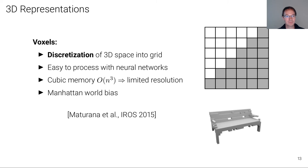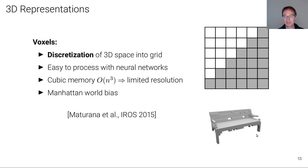One of the natural choices for output representations are voxel representations. Voxel representations discretize the 3D space into regular grid cells, as illustrated in the 2D and 3D examples. They were one of the first representations proposed for the reconstruction task, as they are easy to process with neural networks, basically just requiring generalizing 2D convolutions to 3D convolutions. However, they scale cubically with the three dimensions and thus can only process outputs at limited spatial resolution. Furthermore, they incorporate Manhattan world biases.